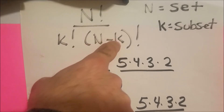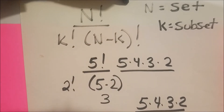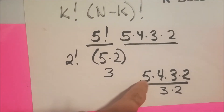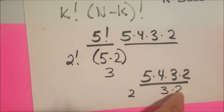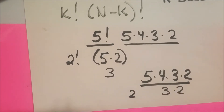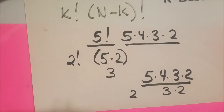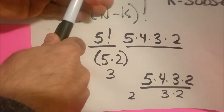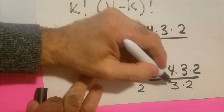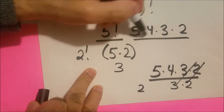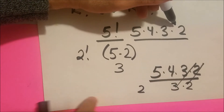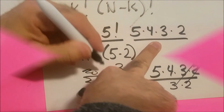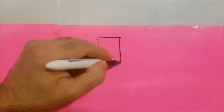And n minus k would be three, since five minus two is three. So we have five times four times three times two on top, then three times two and two times one on the bottom. We can cancel out the three and the two, leaving us with five times four divided by two — that's twenty divided by two, which equals ten combinations.